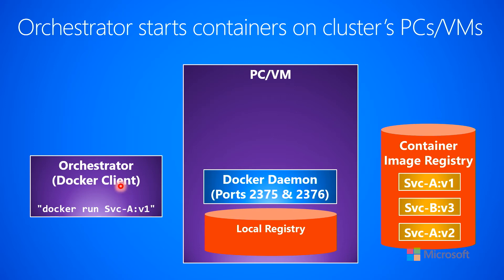Let's say you've told your orchestrator that you want to create a bunch of virtual machines in the cluster, and you want all those virtual machines to go and load the Service A v1 container image into a running container on those VMs. The orchestrator is going to create all the VMs and then execute the equivalent of a Docker run once per VM. Here, I'm only showing what happens on one of those VMs.